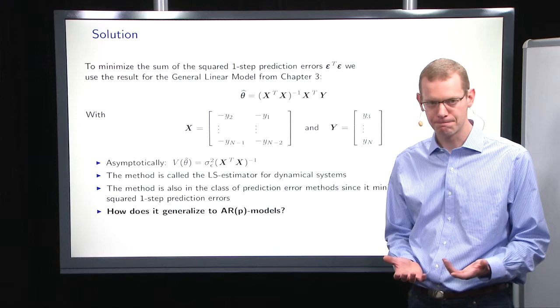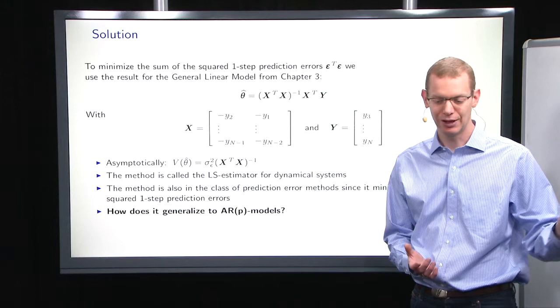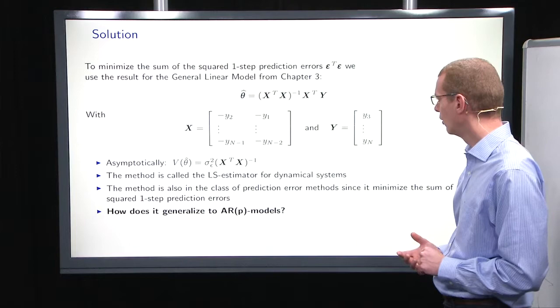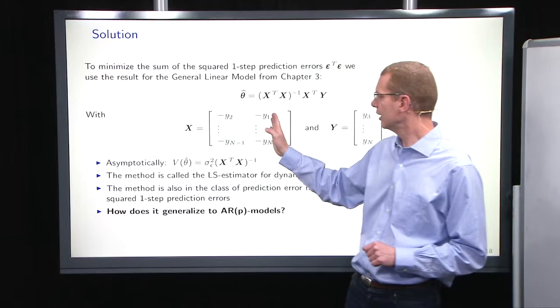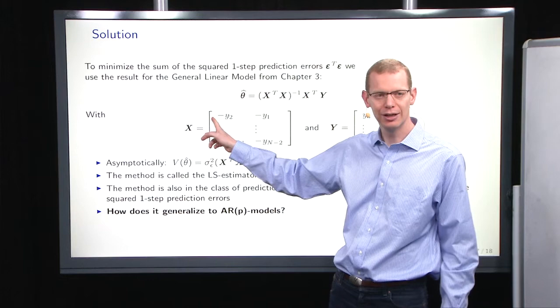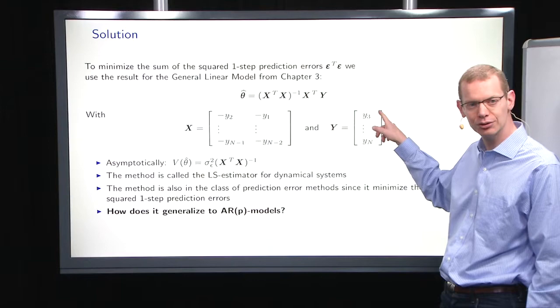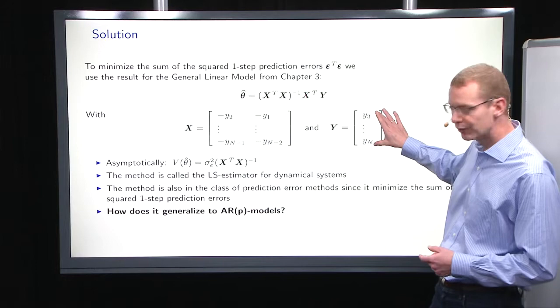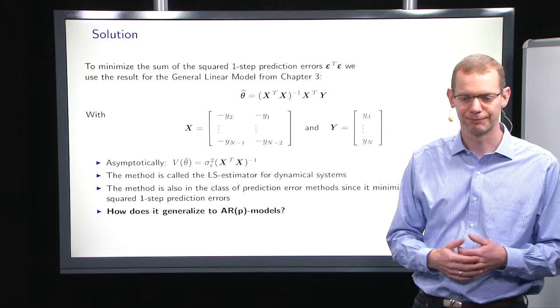How do we generalize this to an AR(p) model? Think of it for a while, press pause, and then we can continue. For an AR(p) model, we need p columns in the design matrix. That means Y_p is the first element in the first column, so the first observation we can use is Y_{p+1}. We have n minus p observations that we can use for an AR(p) model.